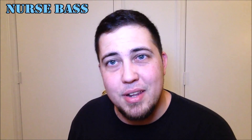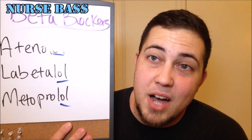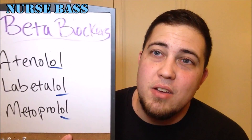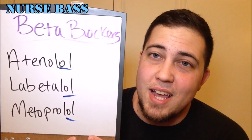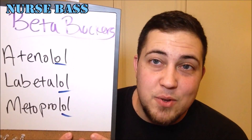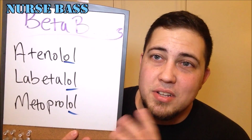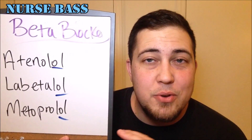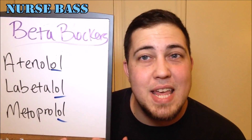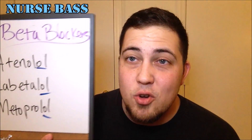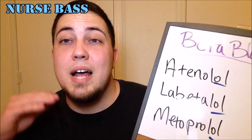Once you have that fundamental piece — the mechanism of action — take a look at the medications themselves. Most times, these medications have something in common that makes them identifiable. With beta blockers, for instance, it's that "-olol" at the end. If you see a medication like atenolol, labetalol, or metoprolol — if it ends in "-olol" — you can safely assume it's a beta blocker.